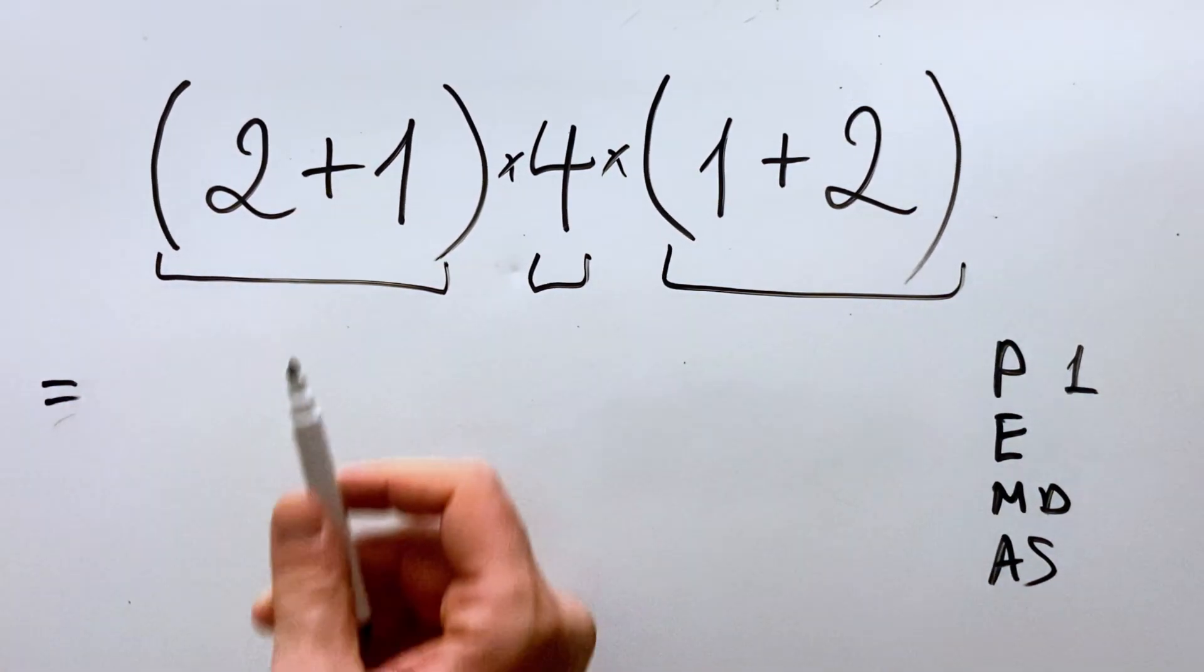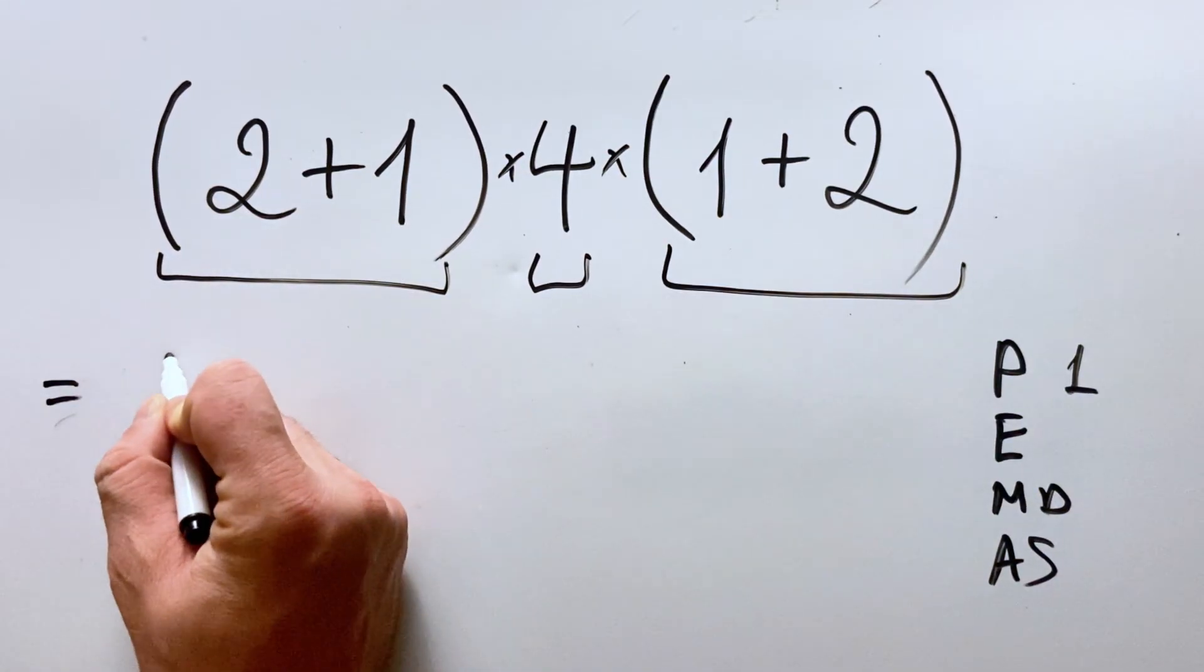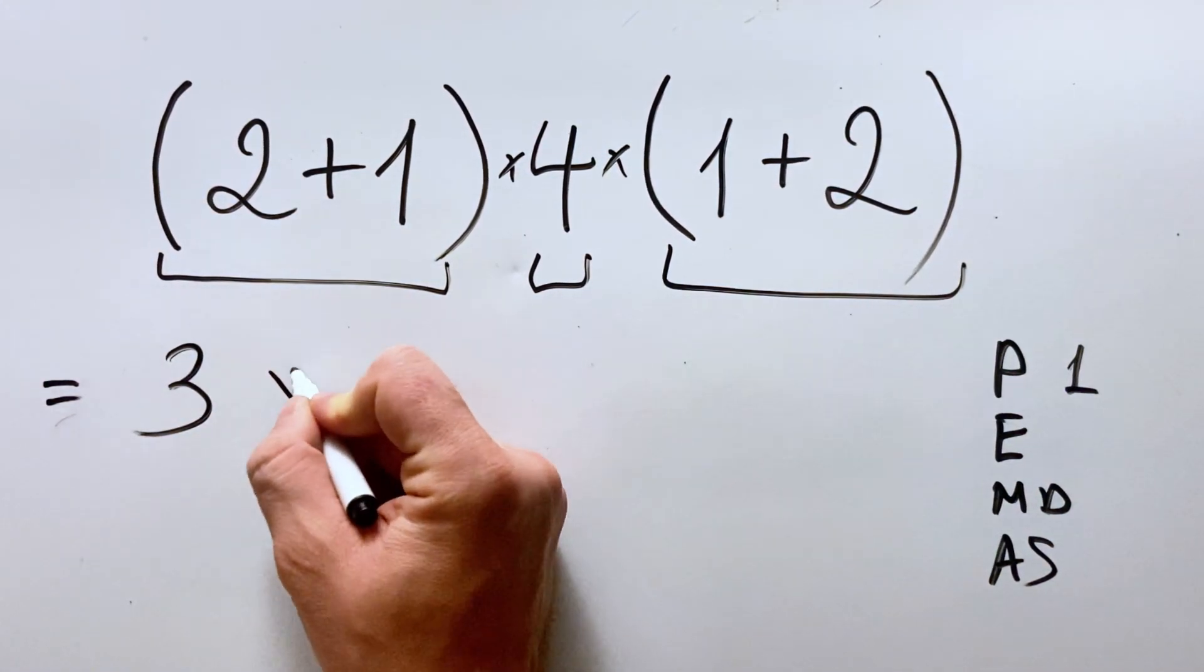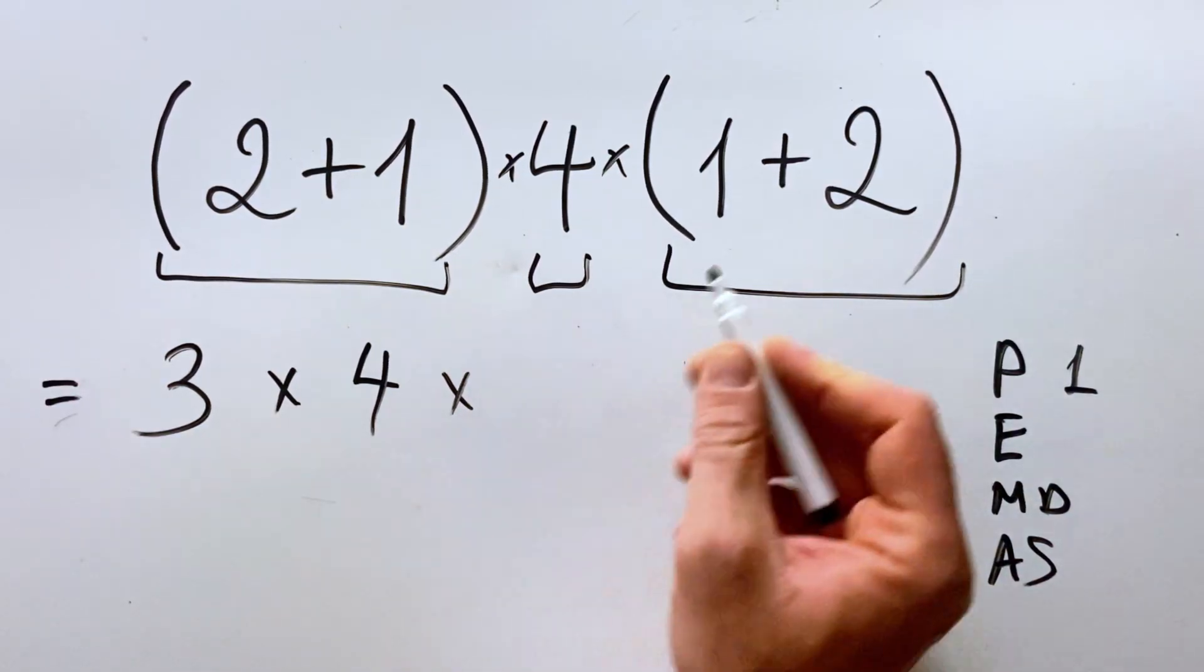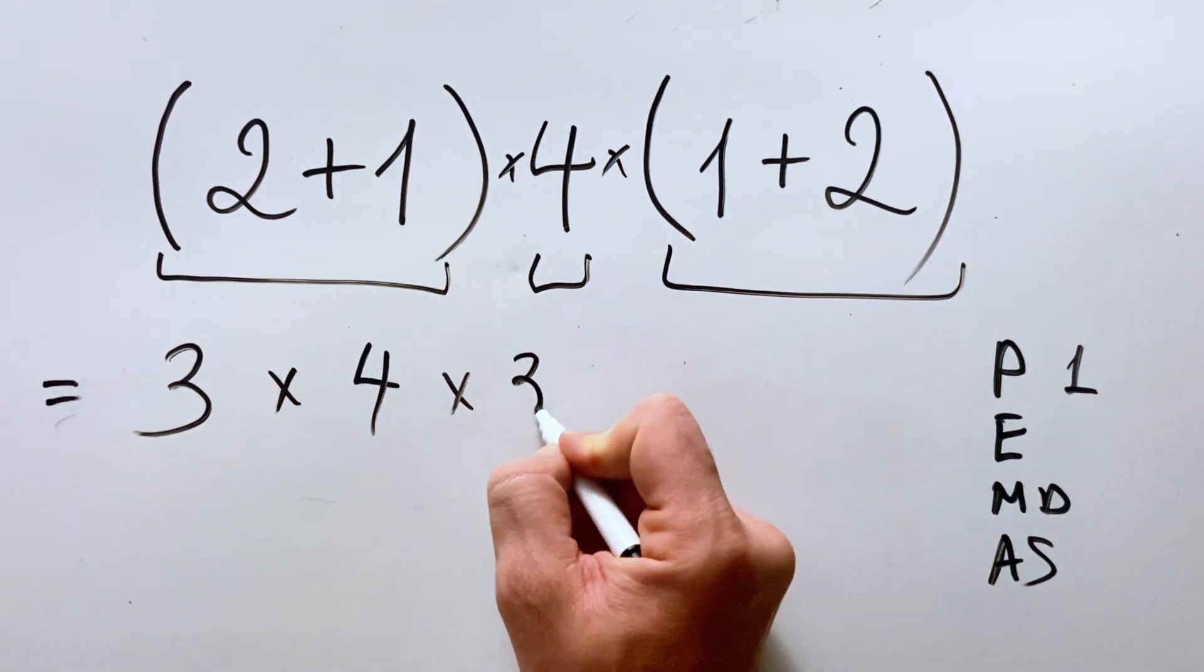So what do we get here? 2 plus 1 equals 3, multiply by 4, and multiply by 1 plus 2 equals 3 as well.